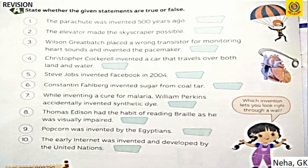Part A — True or False: The parachute was invented 500 years ago — True; first sketched by Leonardo da Vinci in the 15th century. The elevator made the skyscraper possible — True. Wilson Greatbatch placed a wrong transistor while monitoring heart sounds and invented the pacemaker — True; first implanted in a human in 1960.